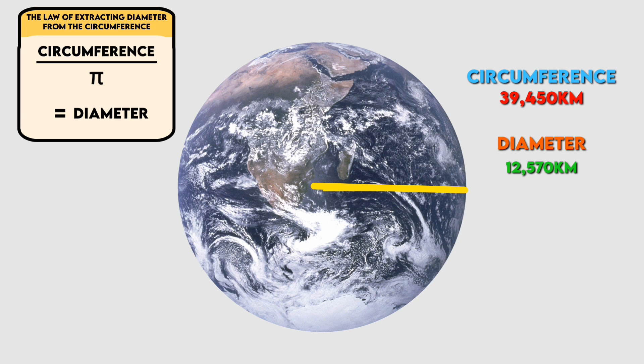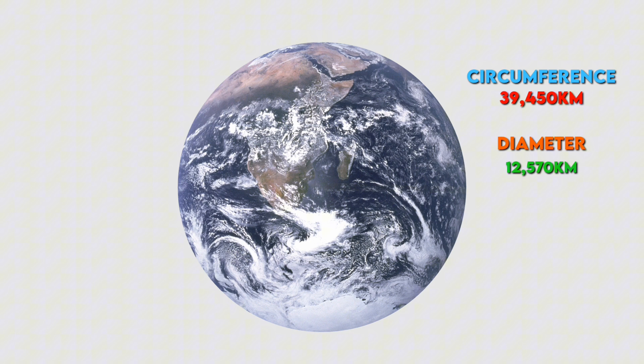These numbers were remarkably close to the actual values. Earth's circumference is 40,075 kilometers, and its diameter is 12,742 kilometers.